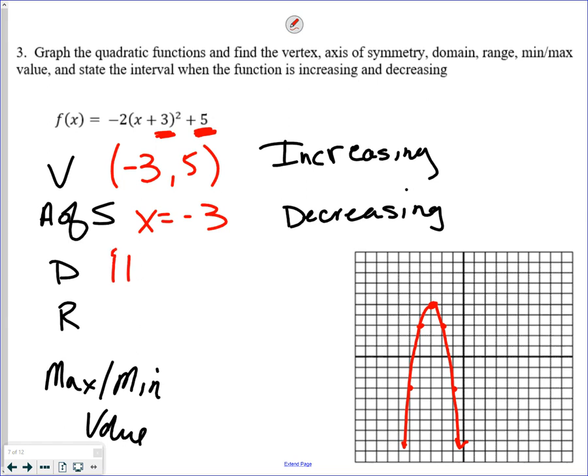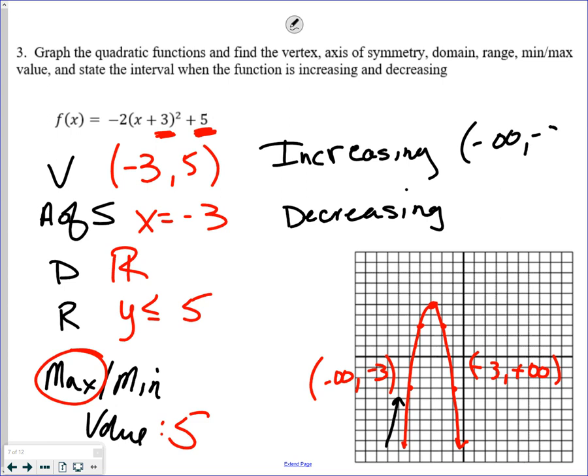Domain. All real numbers. Range. Y is less than or equal to 5, which means there's a maximum value of 5. Increasing and decreasing. This side is negative infinity to negative 3. That's the x value that it changes. This side, then, would be from negative 3 to positive infinity. The question becomes which side is increasing now and which side is decreasing. This side is going up. So that is the increasing side and the decreasing side. I always think about it as a roller coaster. You're going to go up this side and down that side.